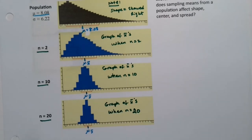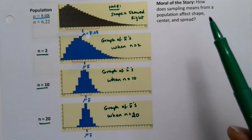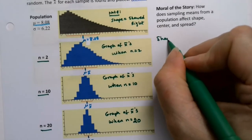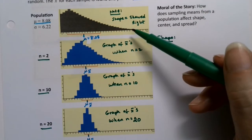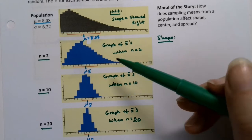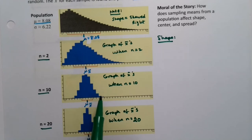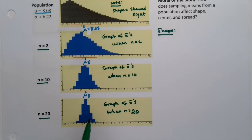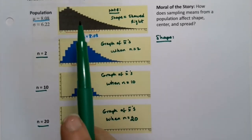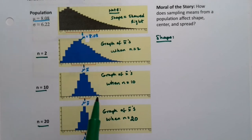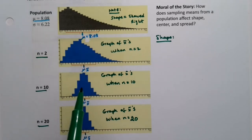There are some very important things going on here — what do we see happening to the shape, the center, and the spread? Starting with shape: it started off skewed right. The population is skewed right, and if you look at the n=2 graph, it's also skewed right. At n=10 it's maybe just a touch skewed right, pretty close to symmetric. And at n=20 it's even more symmetric. So as n gets large enough, the distribution becomes normal, whereas the first two are not.